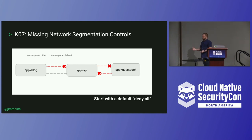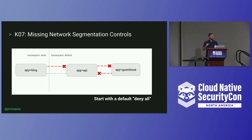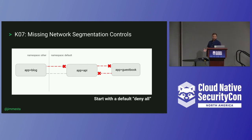We can use service mesh technology such as Istio, Cilium, or Linkerd to plug in overlay networks and carve out segmented network connectivity. Starting with default deny all — this has been a practice since managing iptables many years ago. We decided not to do that in Kubernetes by default, so we have to go back and establish default deny all, then individually build out what you want to allow. Not everything in a cluster should talk to everything else.